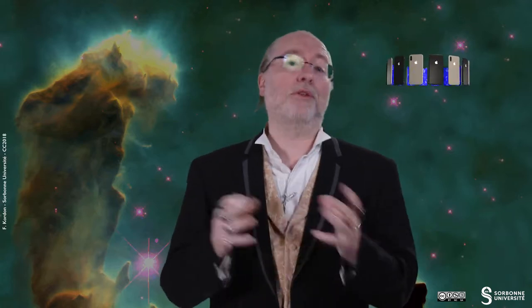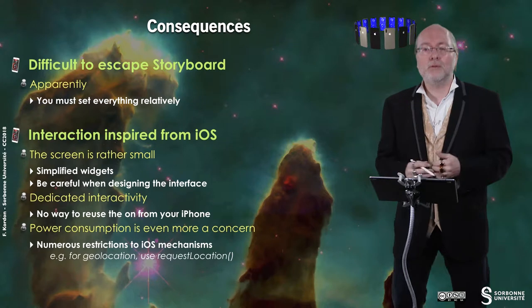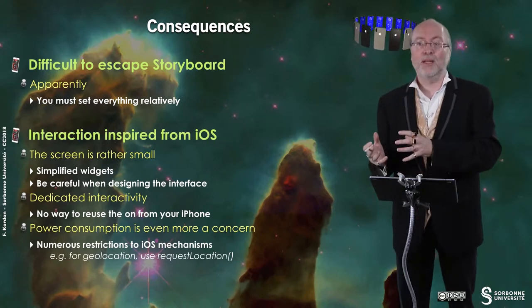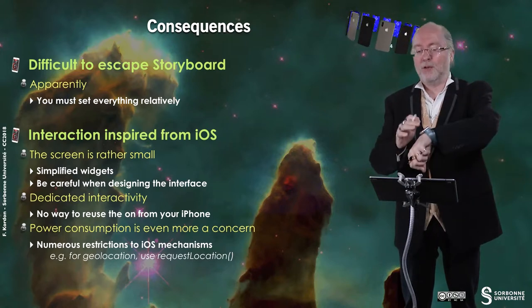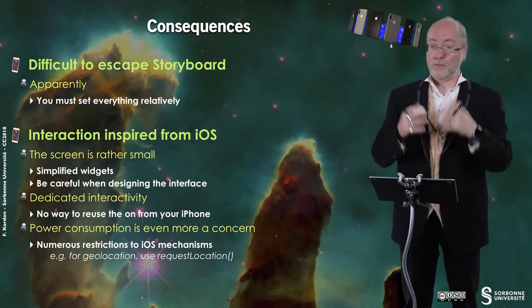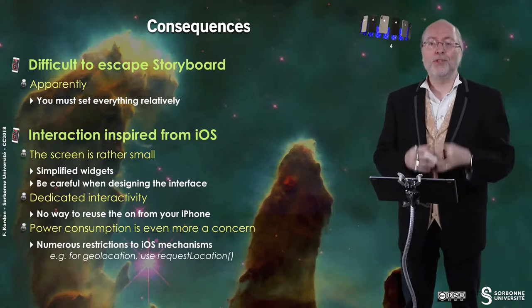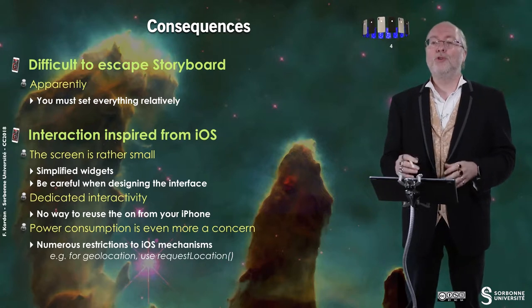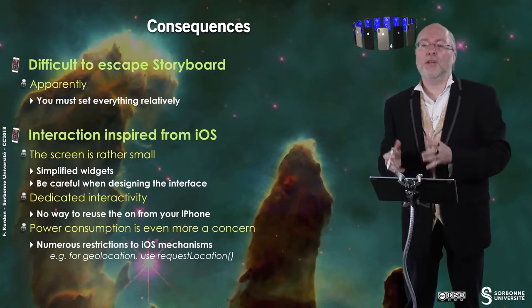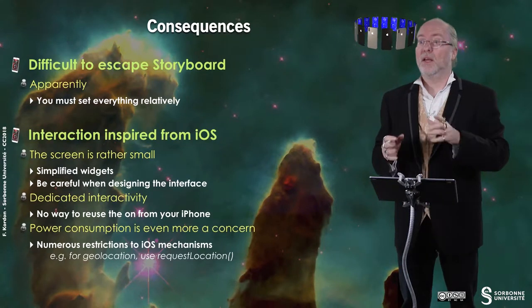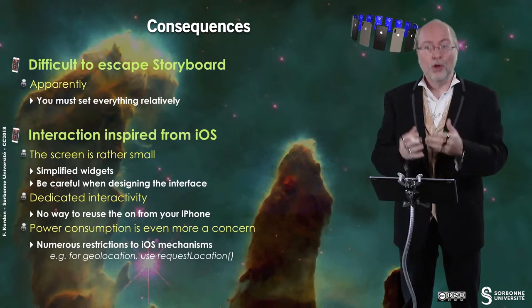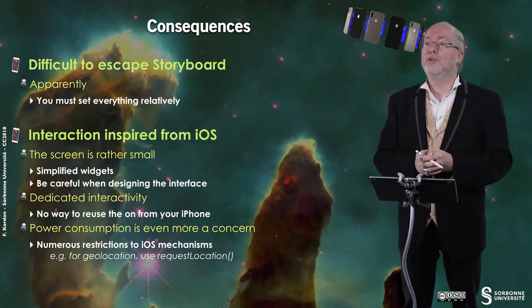You have dedicated interactivity — some mechanisms that are new and some others that are degraded. For example, the slider is much simpler. Also, power consumption is even more of a concern than on a regular device, because on your phone you have plenty of battery compared to what you have on the watch. Typically, there is a trap on geolocation: you cannot have continuous location updates. You can only use a method called requestLocation, which works just once. It's a way to save energy, and it's up to you to decide when to make such a request.